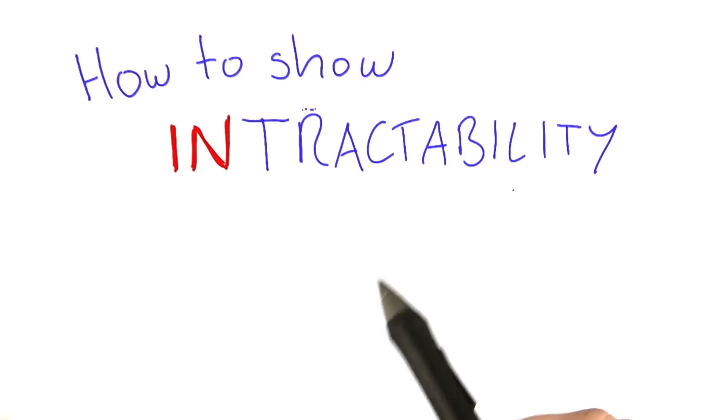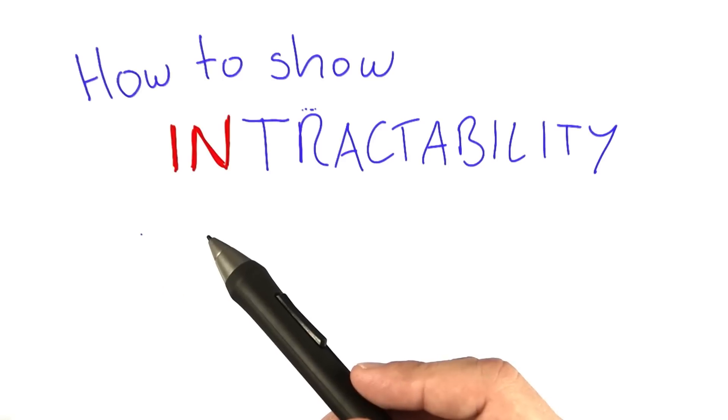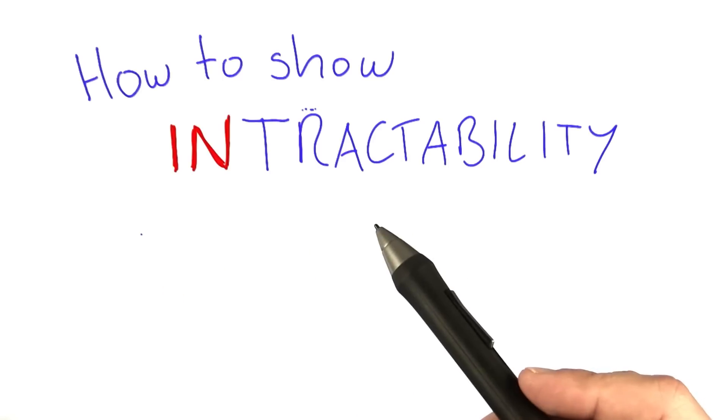We already know how to show that a problem is tractable. We just have to find a polynomial time algorithm for it. But how do we find out if a problem is intractable?